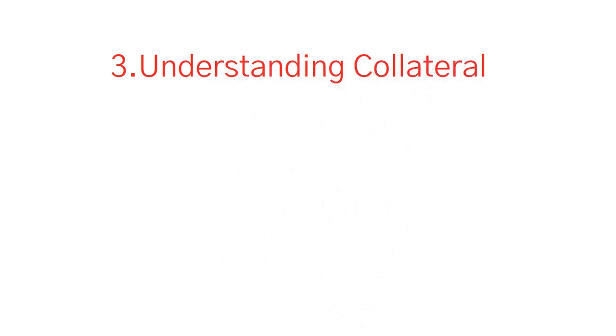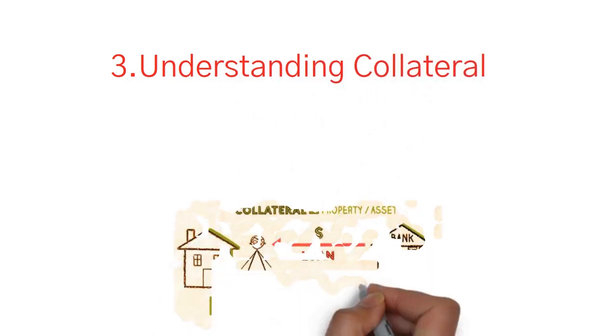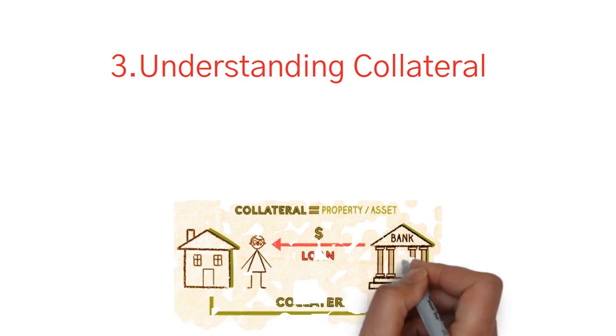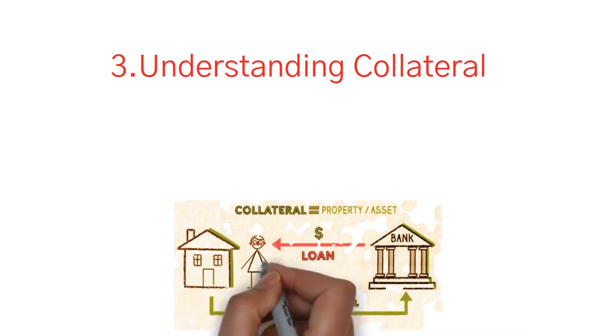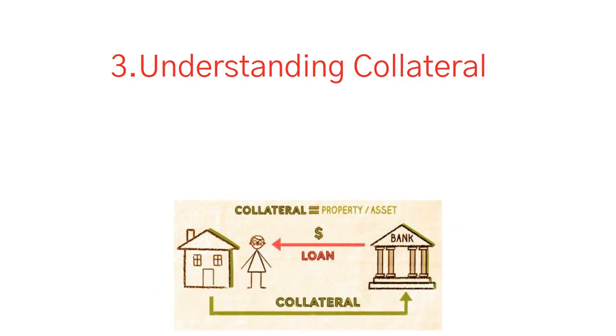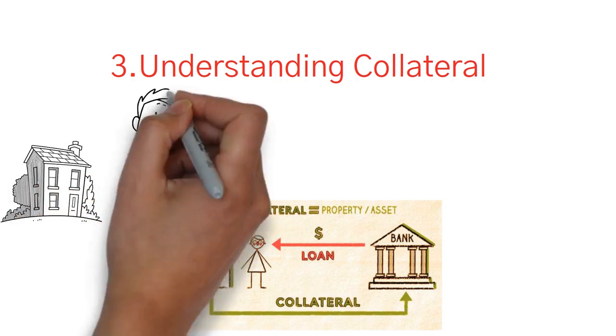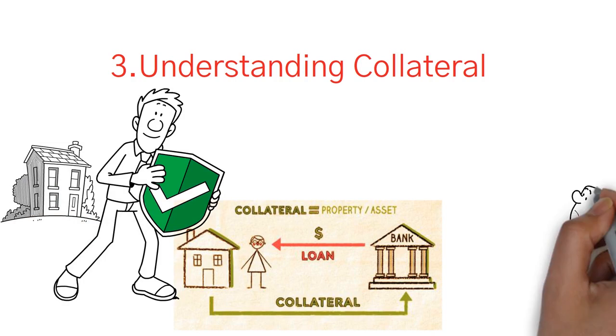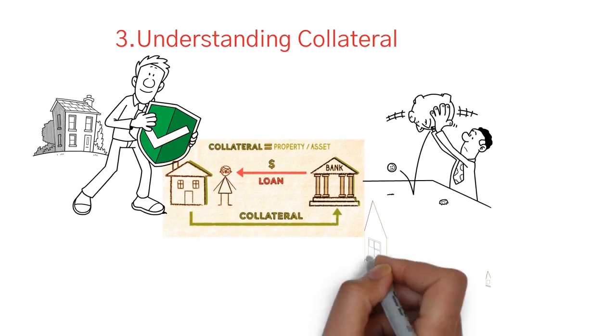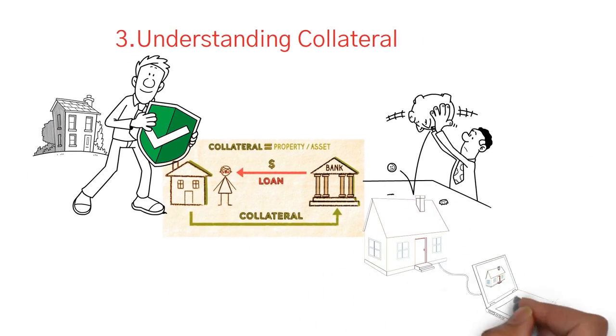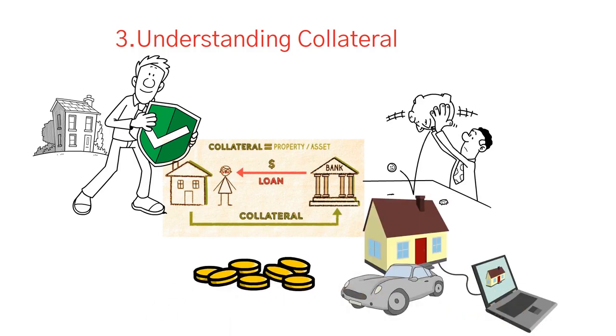Understanding collateral. Collateral is an asset or property that a borrower promises to a lender in case of default on the loan. It is viewed as a way to protect the lender from losses if the borrower fails to make payments. Collateral can be anything from real estate to equipment or vehicles to cash.